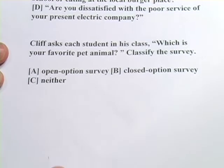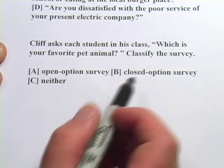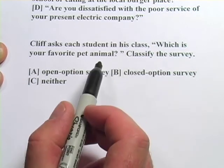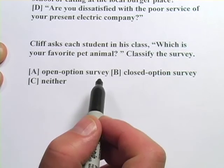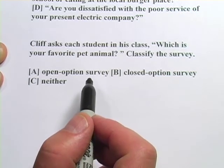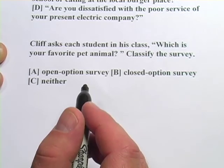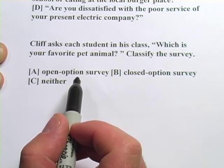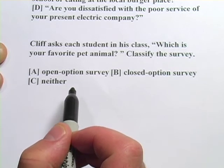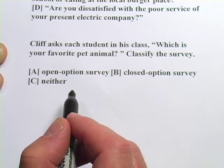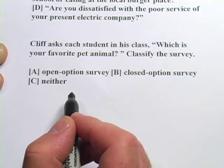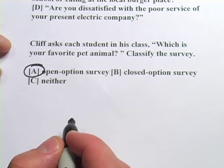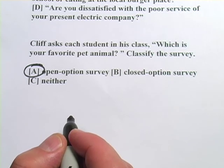Finally, there's one other thing to look at: the difference between an open option survey and a closed option survey. The question says Cliff asks each student in his class, which is your favorite pet animal? — and there's just a blank there. They could answer cat, dog, iguana, or anything they want. That's an open option survey — there's no specific choice. But if you said, which pizza topping is better, pepperoni or sausage, and you only have those two options, that's a closed option survey. So Cliff's question is an open option survey. Just a little terminology to get used to with surveys.